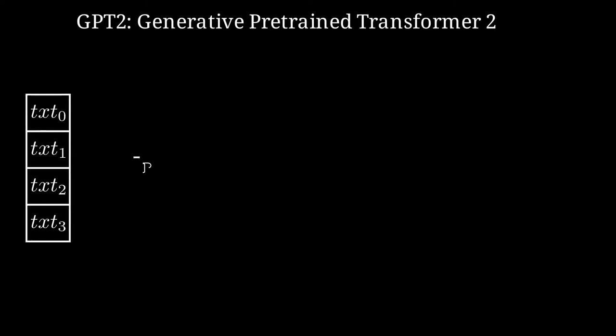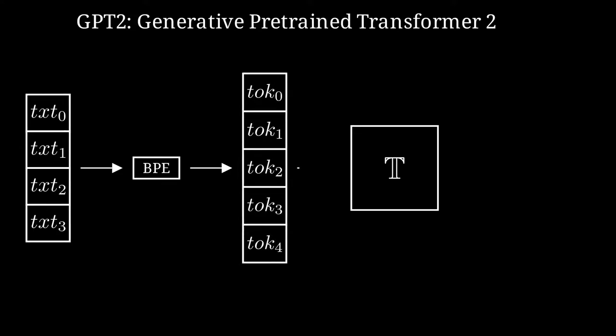The generative pre-trained transformer 2 is a generative architecture for texts. It accepts as Z inputs tokens, here shown as the outputs of the binary pair encoder BPE, and outputs the probability distribution of the next token.